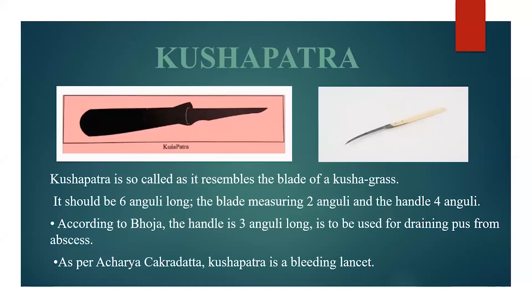Next is Kushpatra. It is so called as it resembles the blade of Kusha grass. It must be 6 anguli long, the blade measuring 2 anguli and the handle 4 anguli. According to Acharya Bhoja, the handle is 3 anguli long, and it is used for draining pus from deep-seated abscesses. According to Acharya Chakradatta, Kushpatra is a bleeding lancet used for Rakta Mokshana or bloodletting.